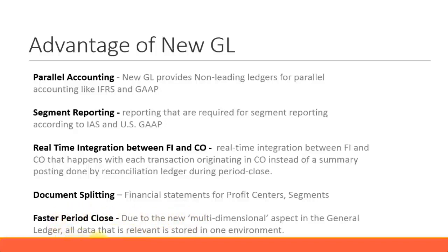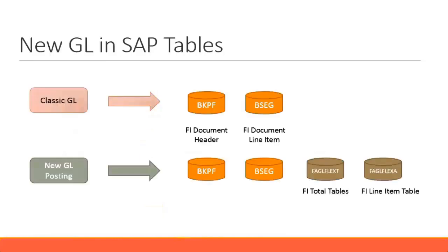Now let us look at how NewGL posts to the SAP tables. Previously with classic GL, you had two tables: BKPF and BSEG. BKPF is the FI document header table, which contains the document date, posting date, reference, document type, period, fiscal year, and so on. And then you have the BSEG table, which contains the document line items — that is the posting key.